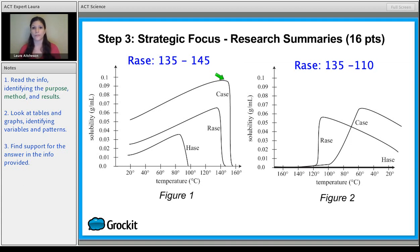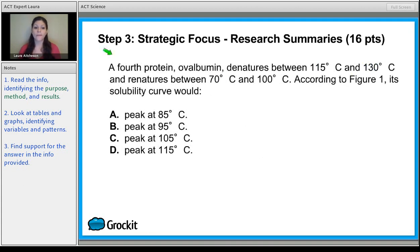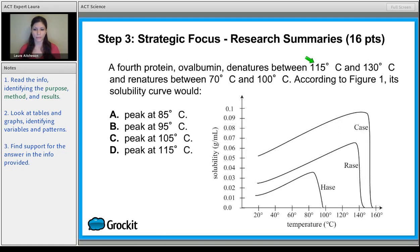So let's use that information for question number one. We have a fourth protein, which denatures between 115 and 130, and then renatures between 70 and 100. Based on what we learned from race and case, we know that its peak is right before it denatures, or right at that point. So let's make sure we're matching it up. Right at that point, this is figure one. So at 135, that's race. Case is about 155. Right at that point is its peak. So that would be 115.